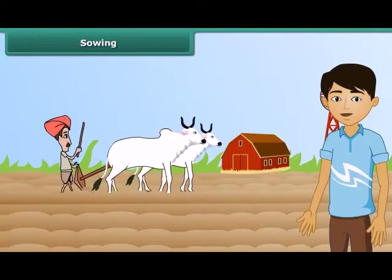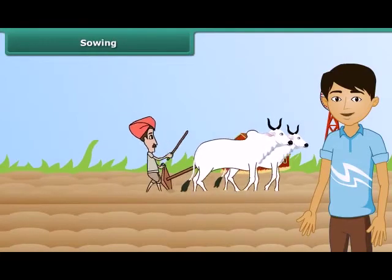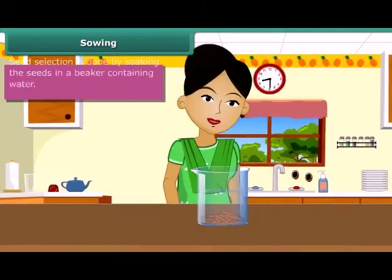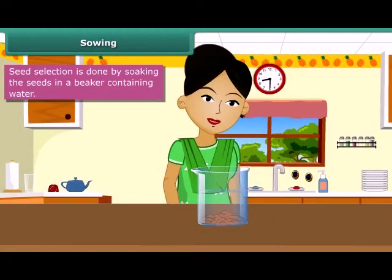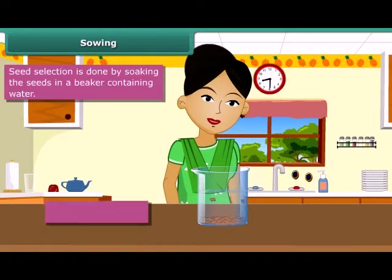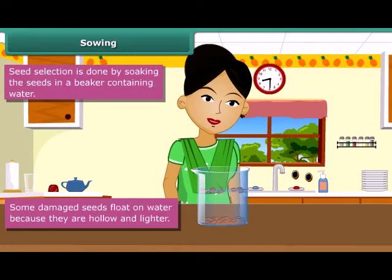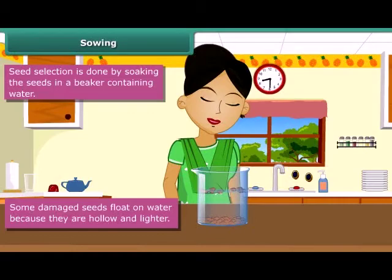Once plowing is done, the next step is sowing. Before sowing, farmers select good quality seeds to get high yields. Have you ever noticed your mother putting some grains in a vessel and pouring water into it? Some seeds start to float. Damaged seeds float on water because they are hollow and hence lighter. This is a good method for separating good, healthy seeds from the damaged ones.